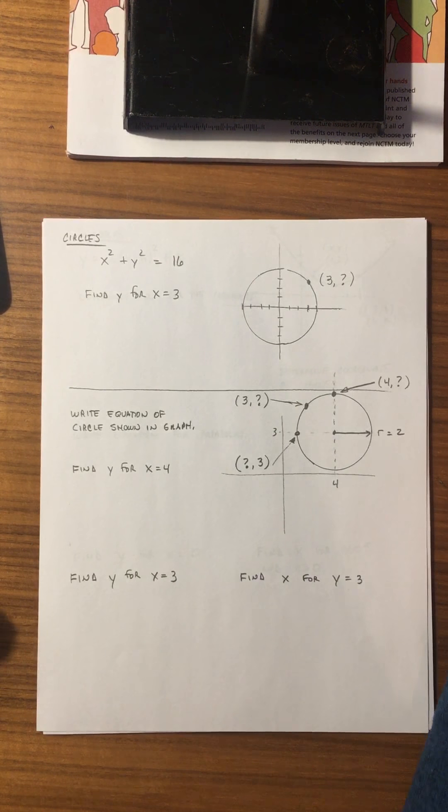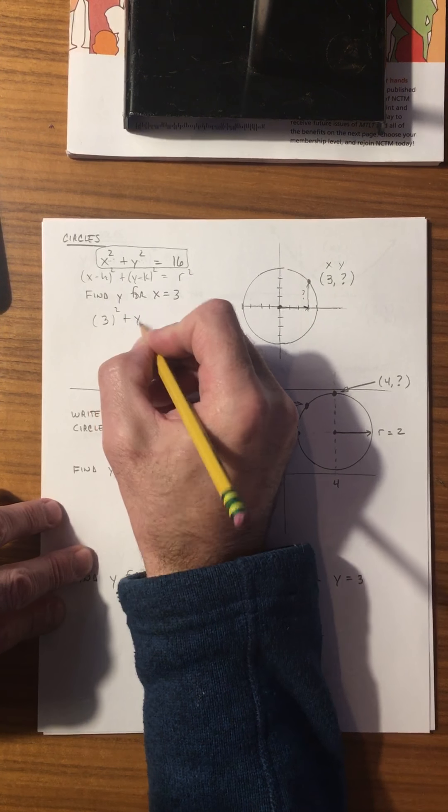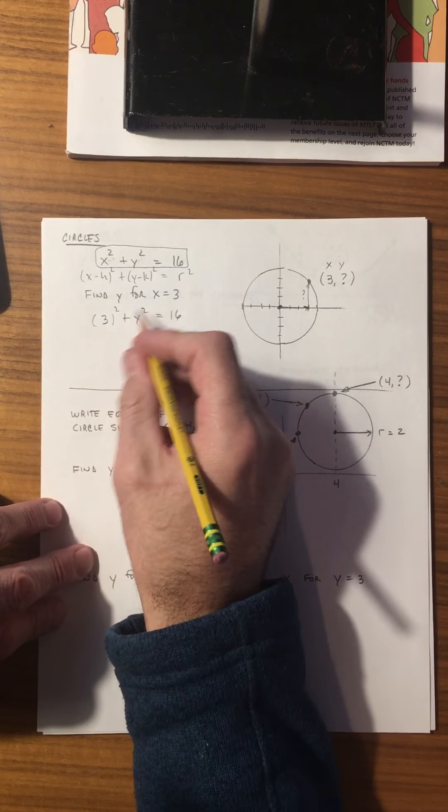What if you want to find the y value when x is equal to 3? We're going out 3 and we want to find out how far up you go. So we have 3 squared plus y squared equals 16 and we solve for y. We subtract 9 from both sides to get 7, then take the square root, and y equals plus or minus the square root of 7, which is approximately 2.6. When we plug in x equals 3, we get two values: y equals 2.6 and y equals negative 2.6.